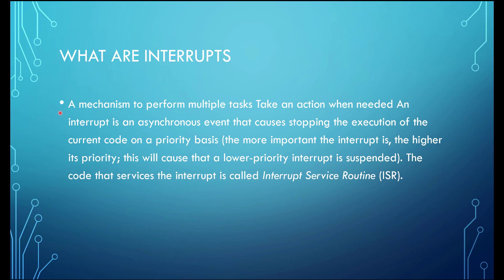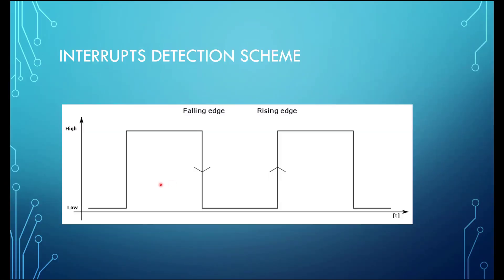Interrupts can be detected on the falling edge and the rising edge, and we can also program our microcontroller to detect interrupts at both edges. The falling edge is the transition of a logic 1 signal to logic 0, and the rising edge is the conversion from logic 0 to logic 1. When this transition occurs, the interrupt is detected.